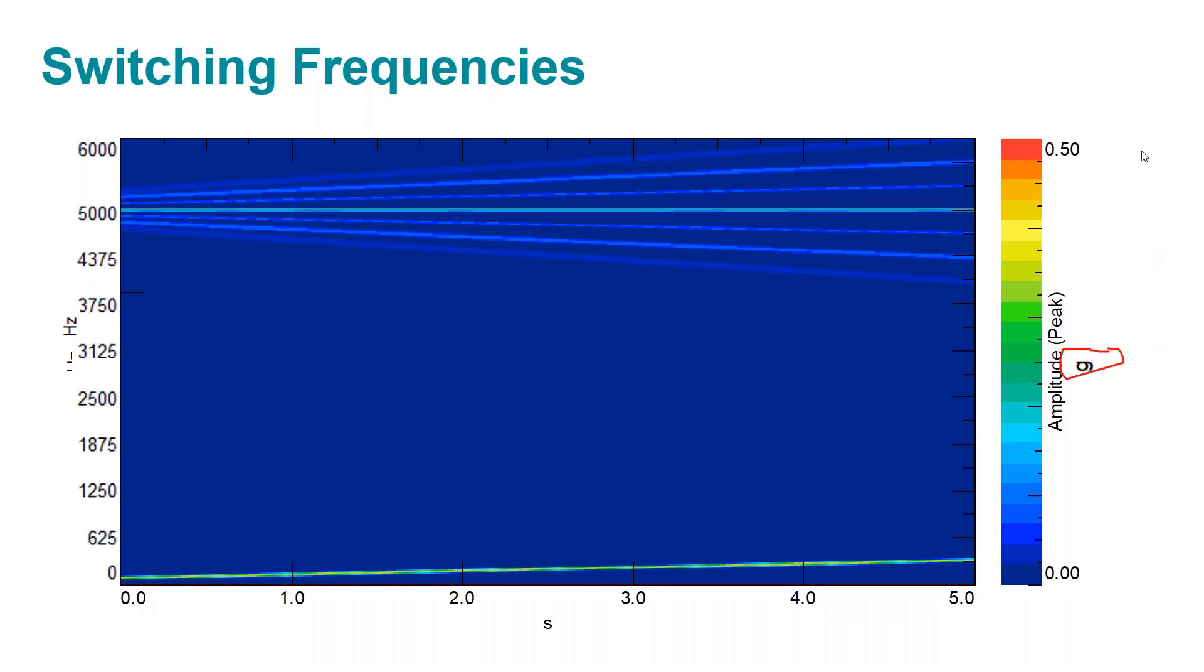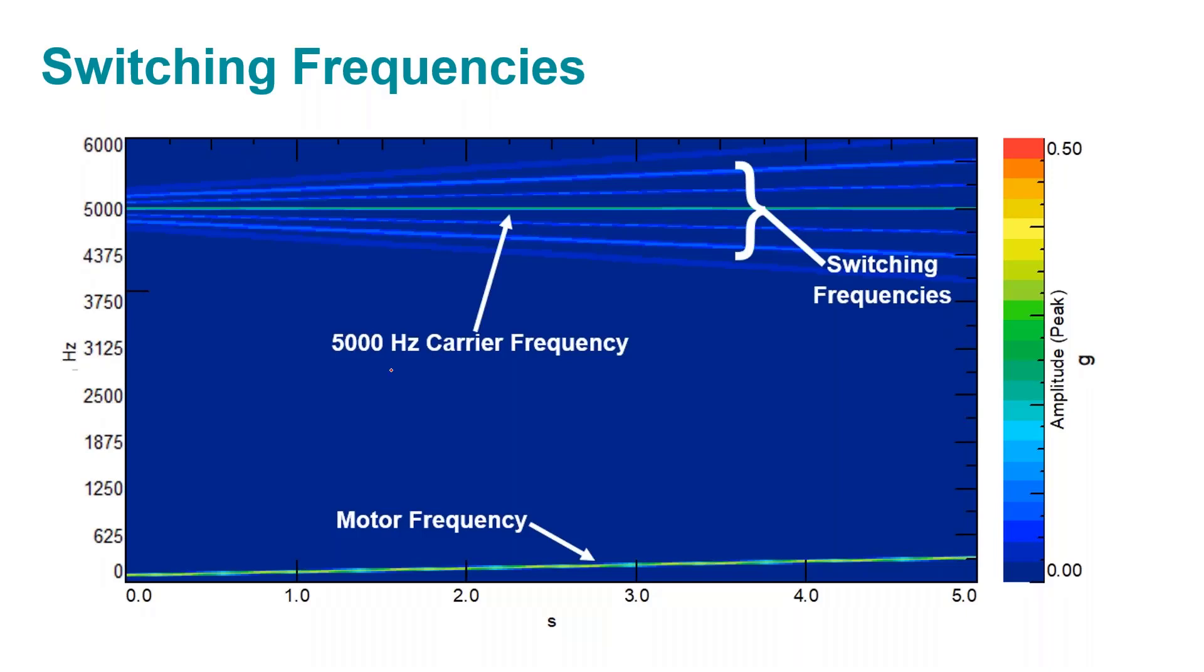So what's your, I see I guess the carrier frequency of 5,000 and then like you said those harmonics as well. Yeah, we got a 5,000 hertz carrier frequency and then we got these so-called switching frequencies that are harmonics.